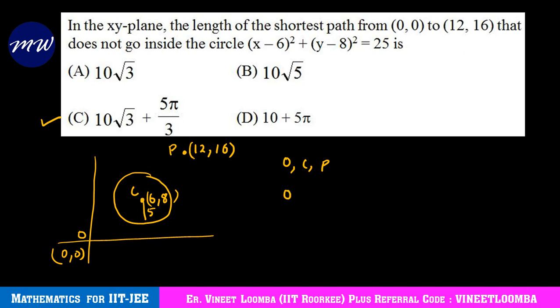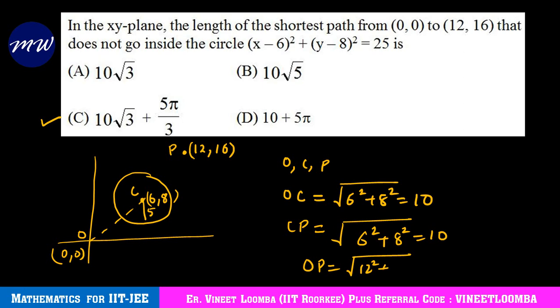How do we know they're collinear? Find the OC distance: under root of 6 squared plus 8 squared, that is 10. This will be required, that's why I'm finding it. CP distance is 12 minus 6, that is 6 squared, plus 16 minus 8, that is 8 squared, again 10. And OP distance is under root of 12 squared plus 16 squared, that is nothing but 20. So OC plus CP equals OP, so definitely these 3 points are collinear.